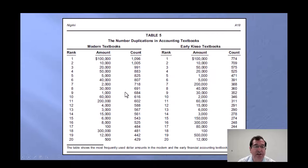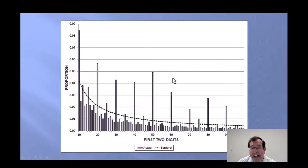The way I get around this is if I analyze the first two digits, which go from 1, 0, up to 9, 9, and the expected proportions go from 4.1% to just under a half percent. If I analyze the first two digits, I can see the excess at 1, 0, 2, 0, 3, 0, 4, 0, and this tells me that the numbers in accounting textbooks do not conform to Benford's law.